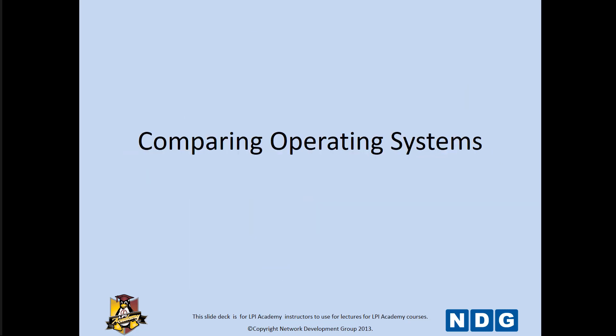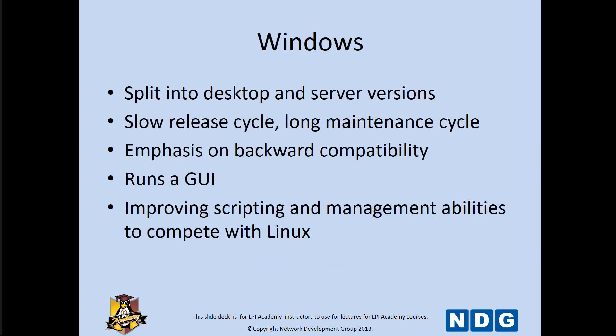Comparing our operating systems. Windows will split into desktop and server versions. It has slower release cycles and longer maintenance cycles. There's an emphasis on backwards compatibility. It does have a graphical user interface — a GUI. And it does improve scripting and management abilities to better compete with Linux.